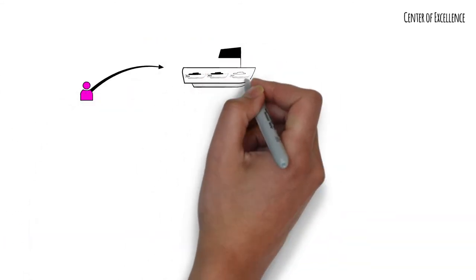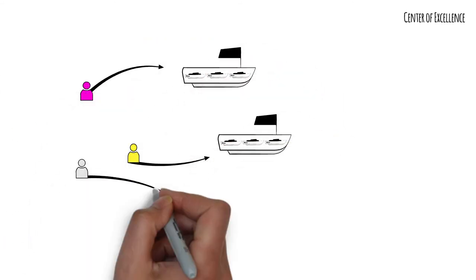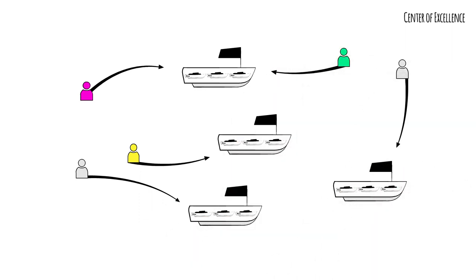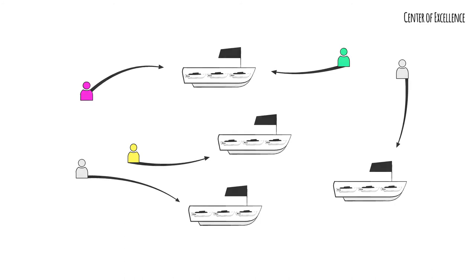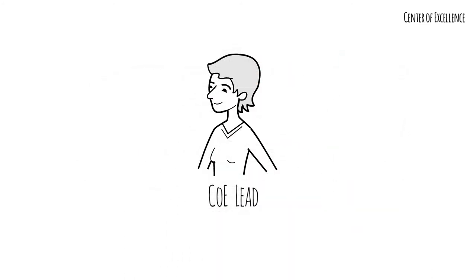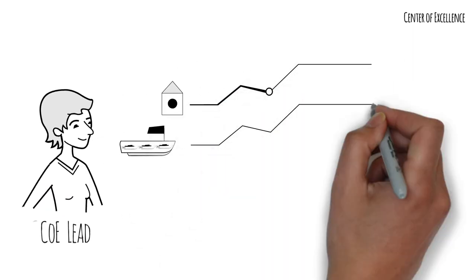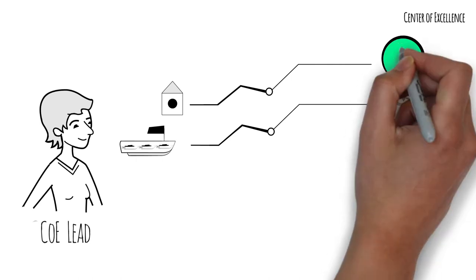But with multiple COE Liaisons supporting several different Tribes, who makes sure that all members of the COE are working together to deliver on its mission? That's the job of the COE Lead. They prioritise the COE's workload and ensure the COE is in lockstep with the Tribe to fulfil the mission.